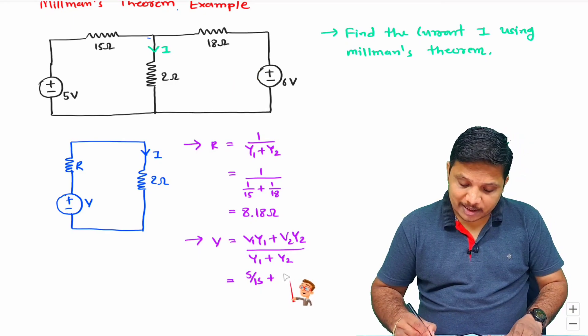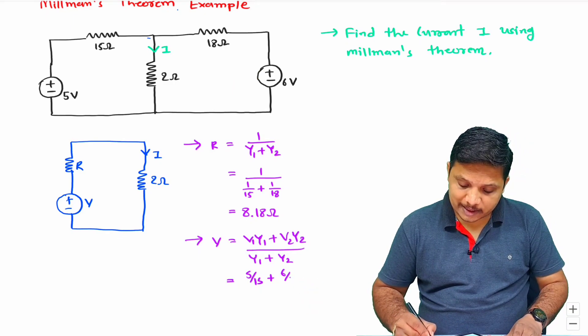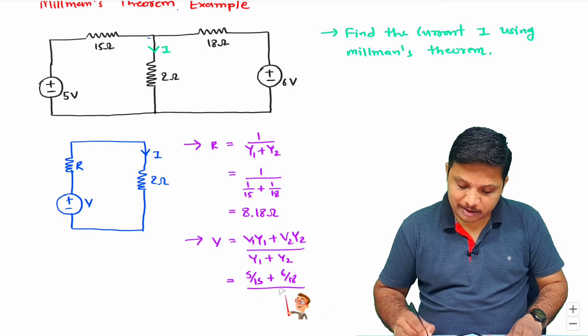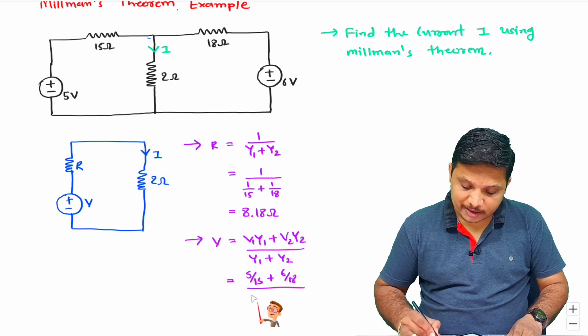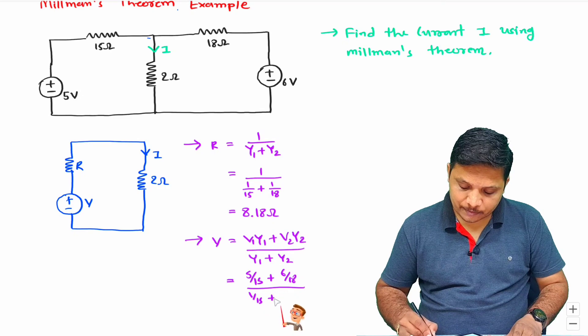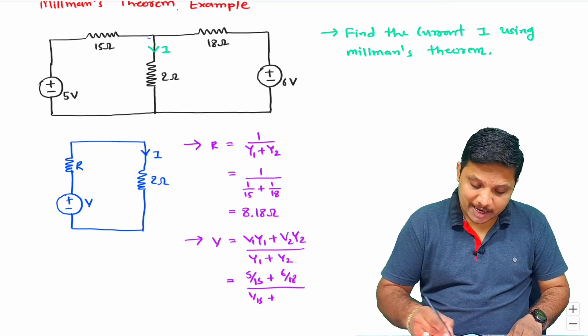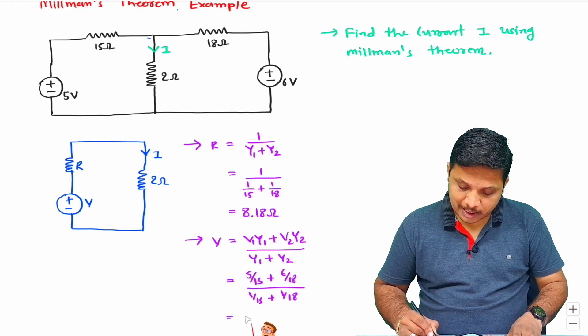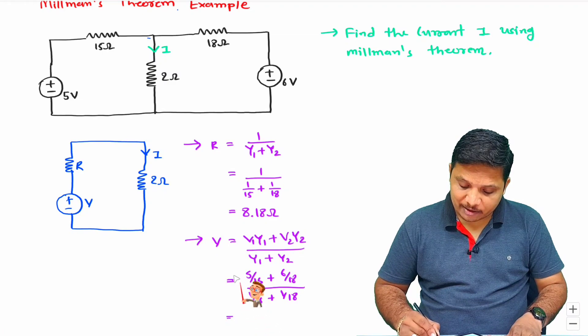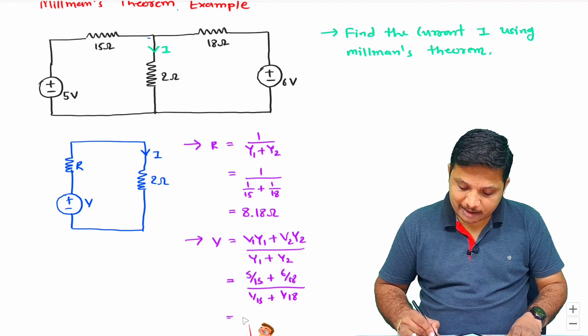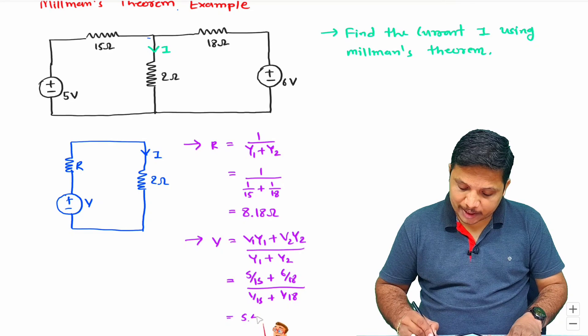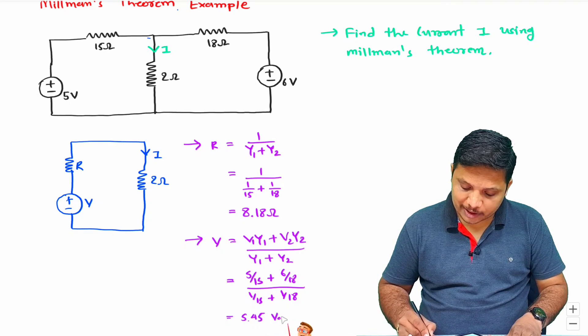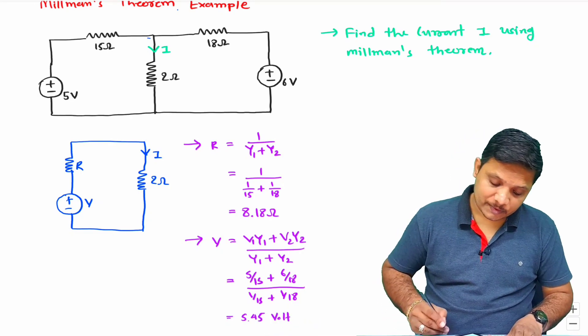So this will be 6 by 18 divided by Y1 is 1 by 15 and Y2 is 1 by 18. If you solve this, you will get voltage V equal to 5.45 voltage.